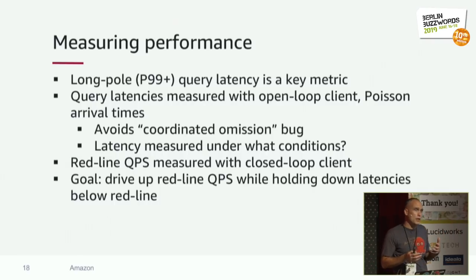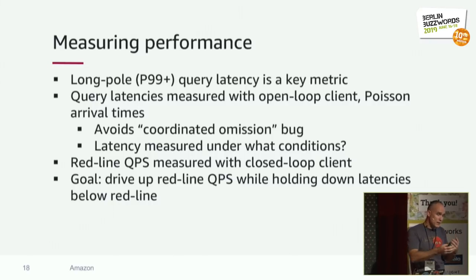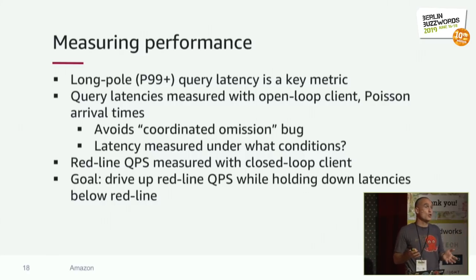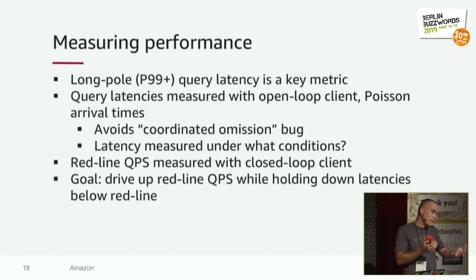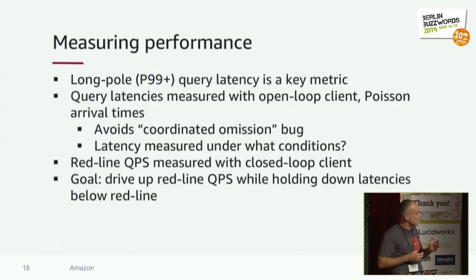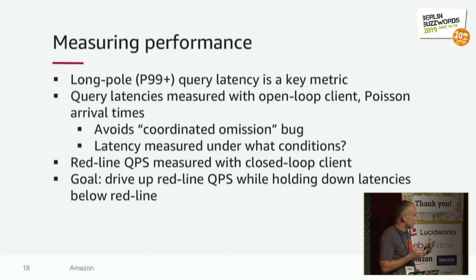For redline QPS, we measure with a closed-loop client that sends a request, waits for the response, and then sends another. With enough clients, the metrics will be close to your redline capacity. When measuring latency, we struggled with at what load to measure — at redline there's too much queuing, and even at 50% load with a Poisson process you measure a lot of contention. So we measure at a fairly low rate because we really want to measure whether the software got any slower at computing the answer to a query.